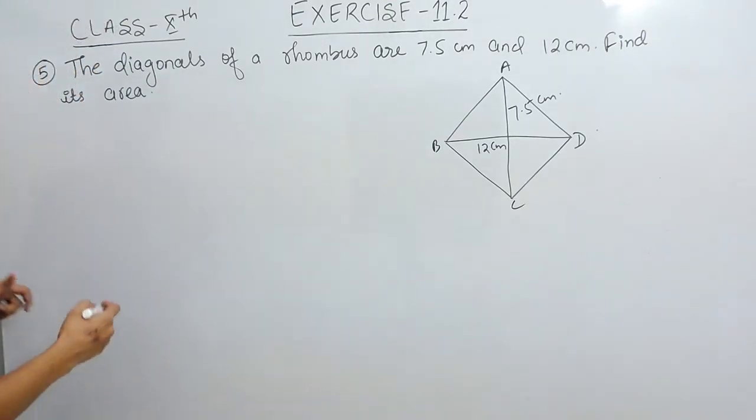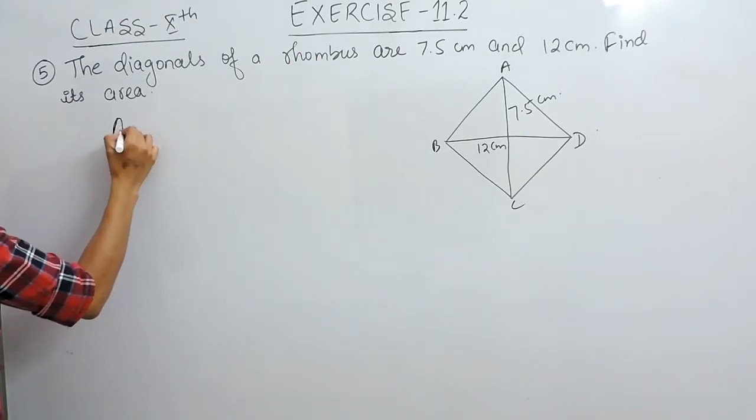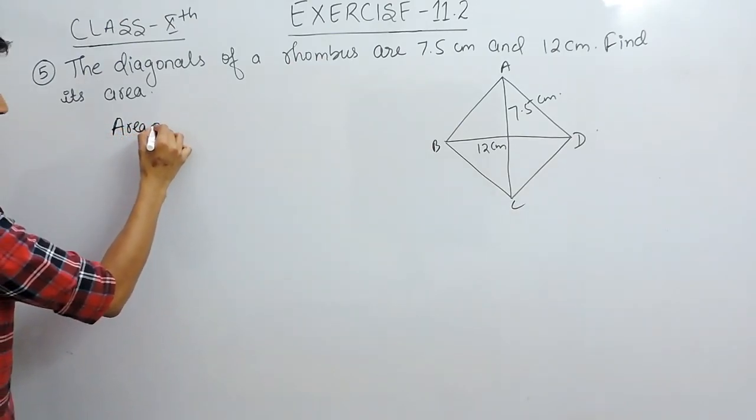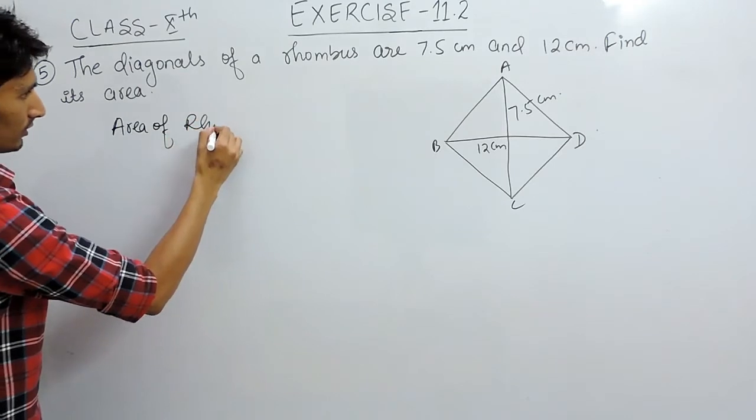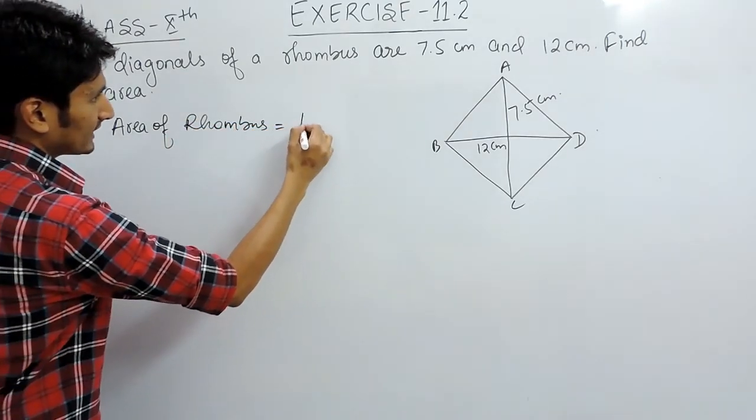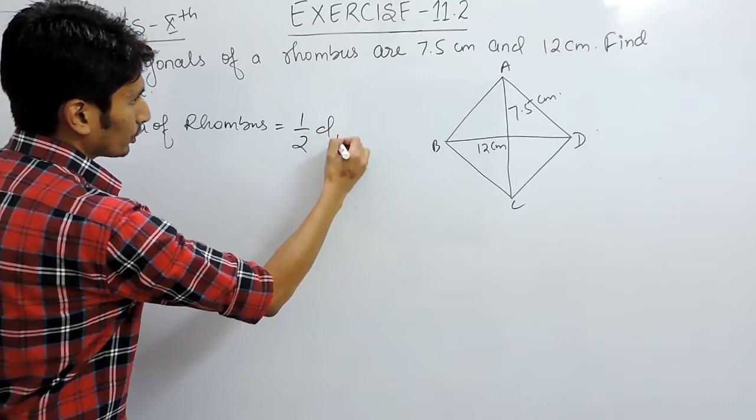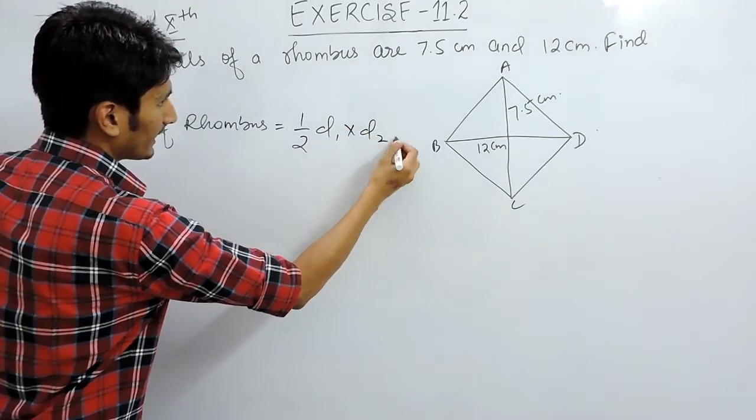We know that the area of a rhombus is basically half the product of its diagonals.